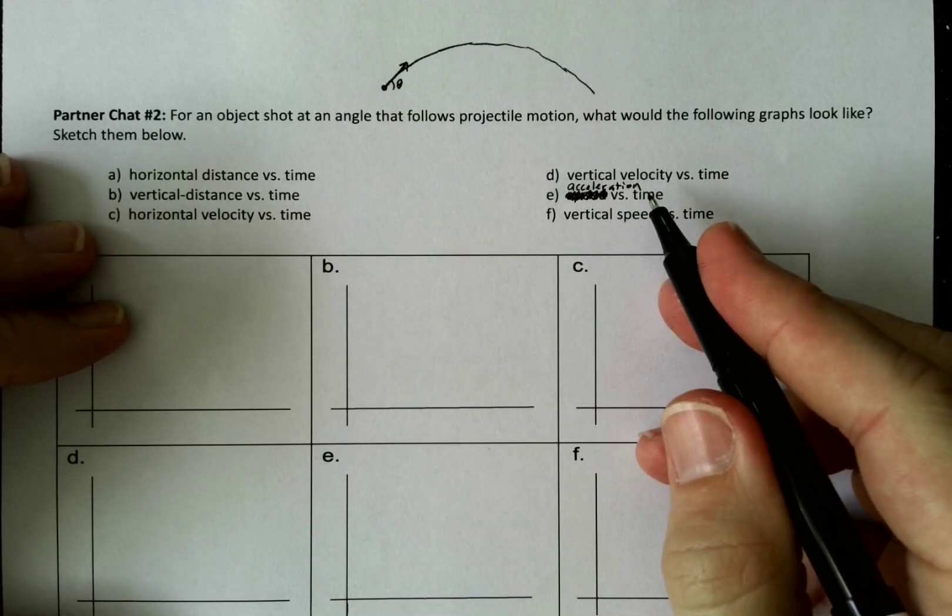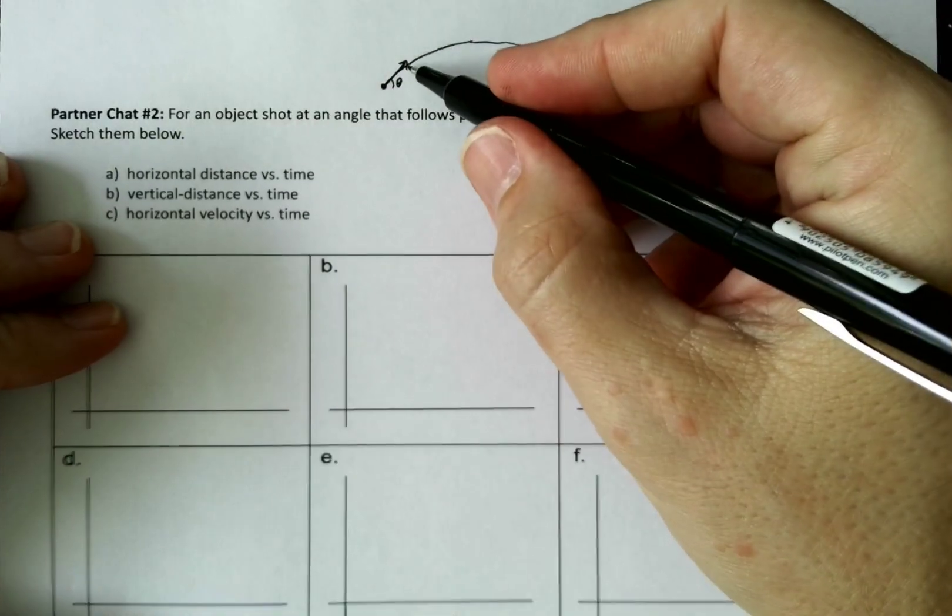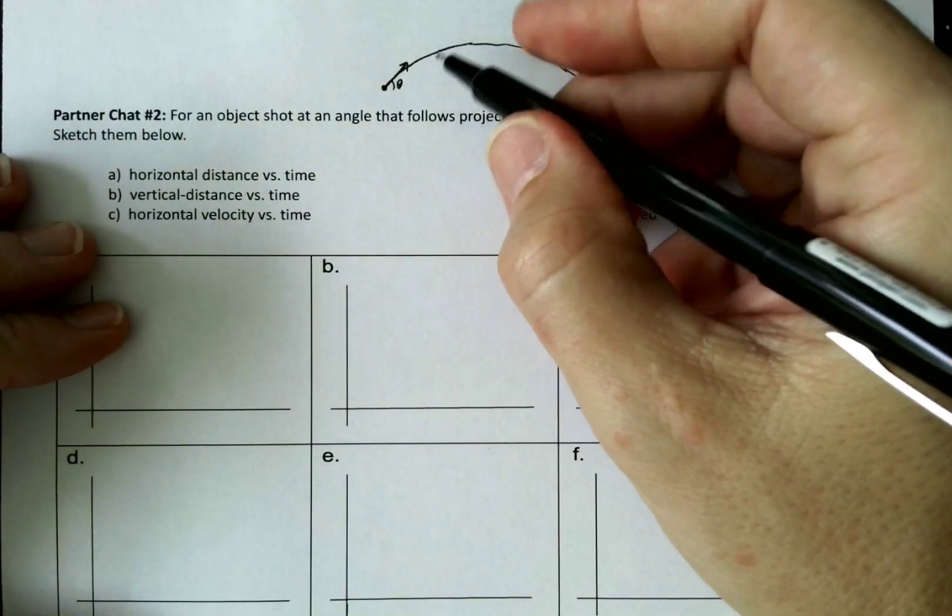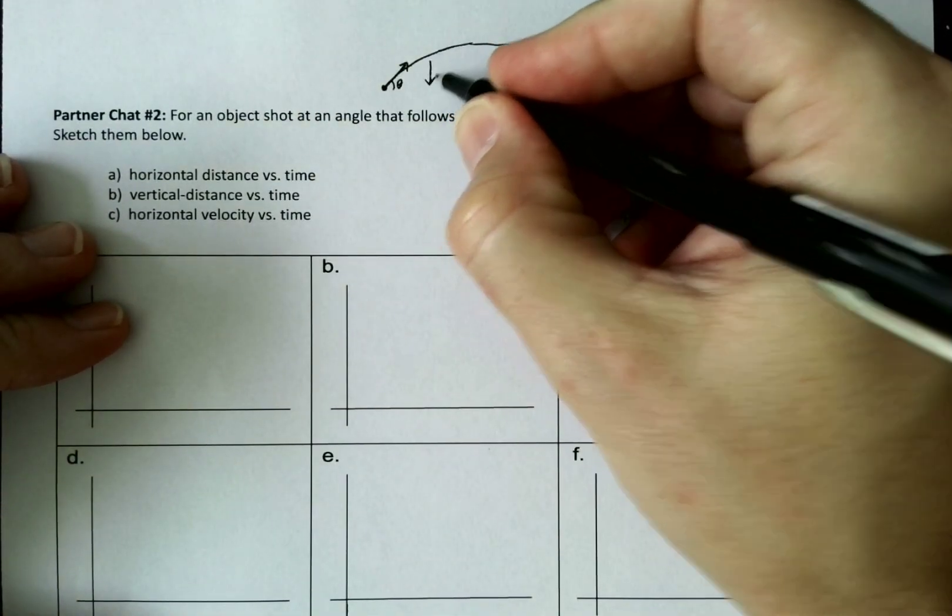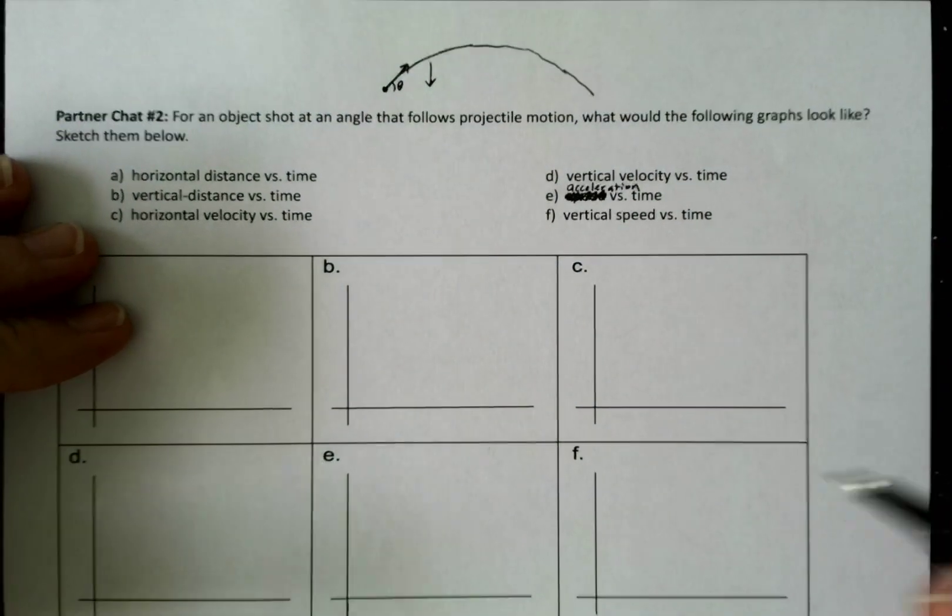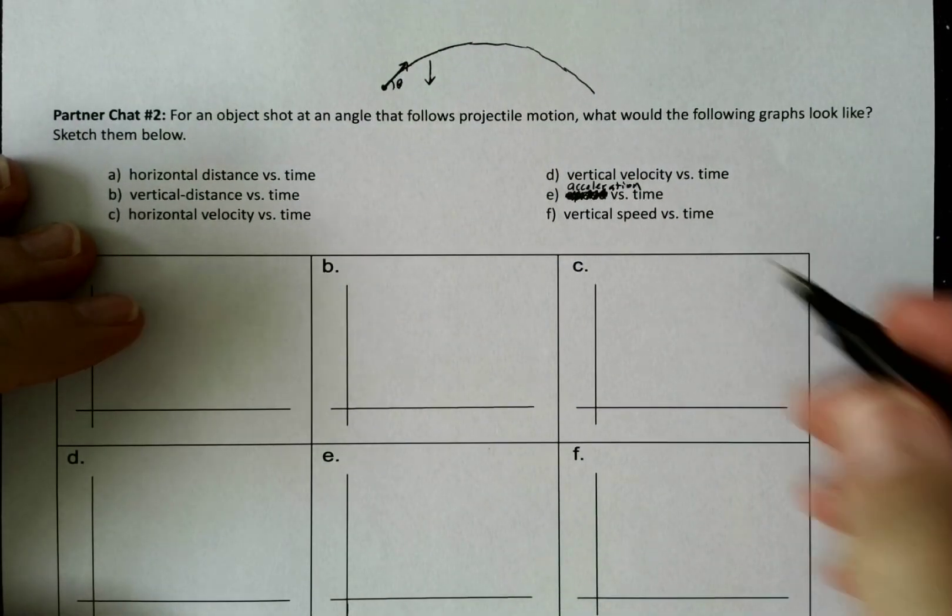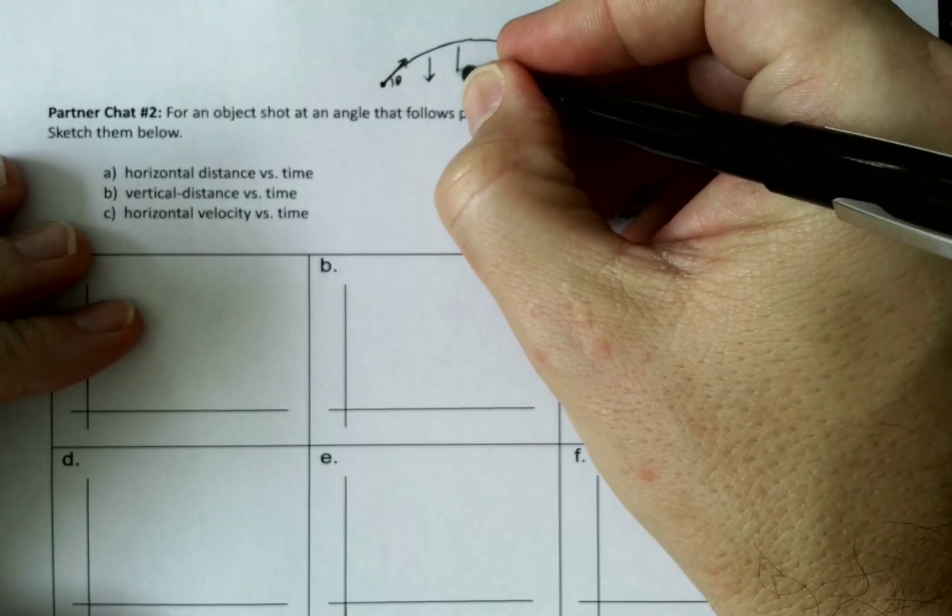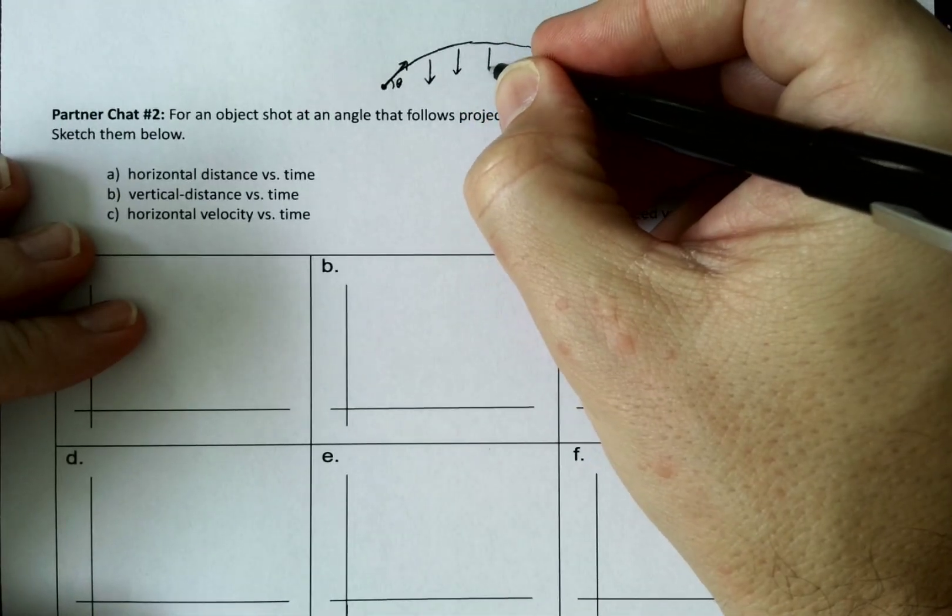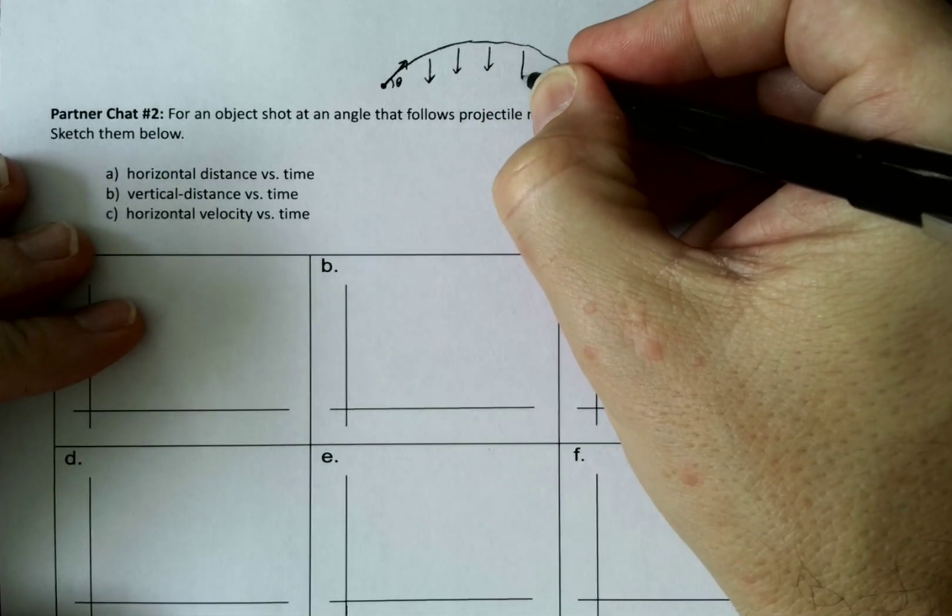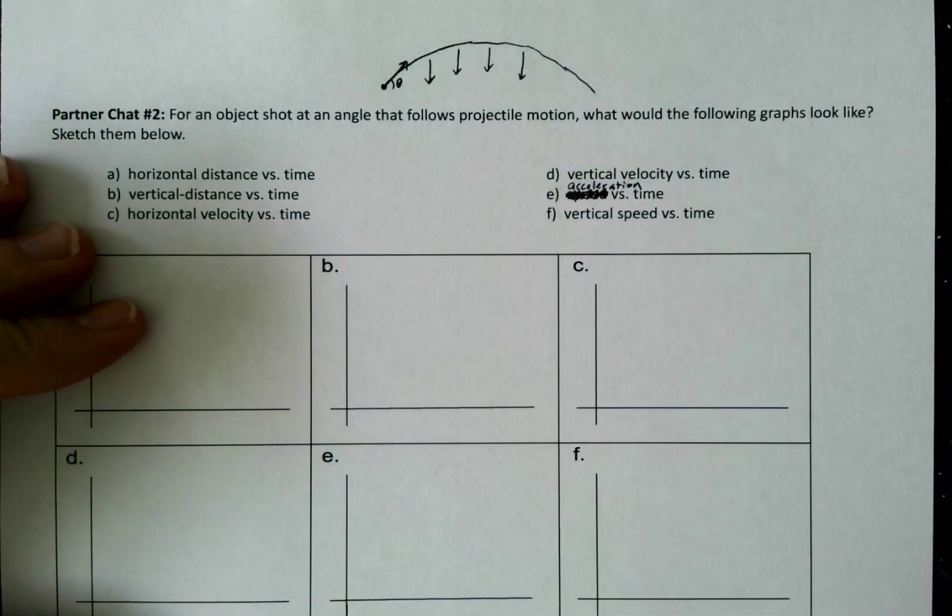The acceleration versus time, we know that the only force acting on the ball as it travels is gravity. Gravity is always pulling directly down, which means the only acceleration can be directly down. And so that acceleration, because the force of gravity doesn't change, should always be exactly the same, the same length every single time.